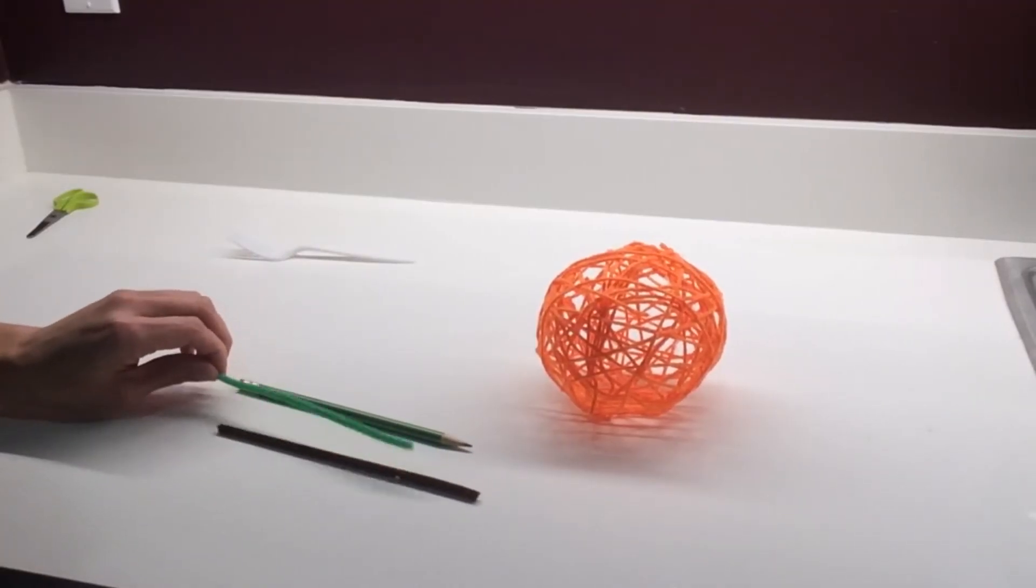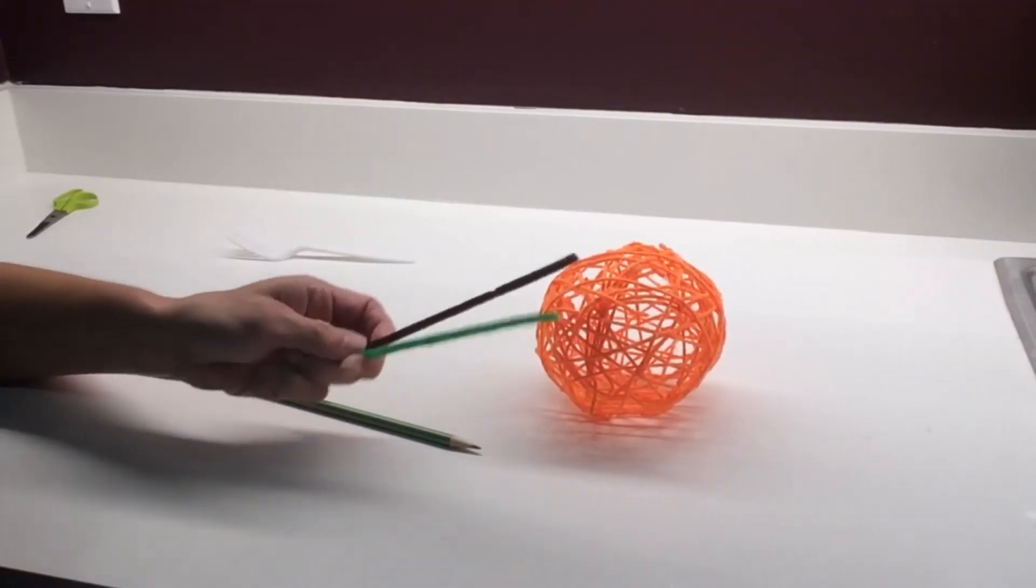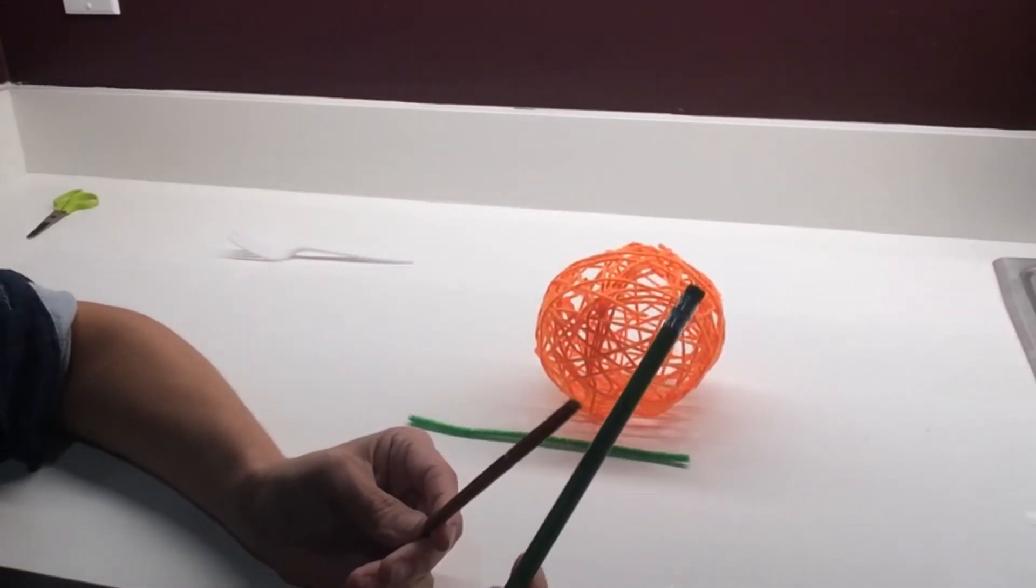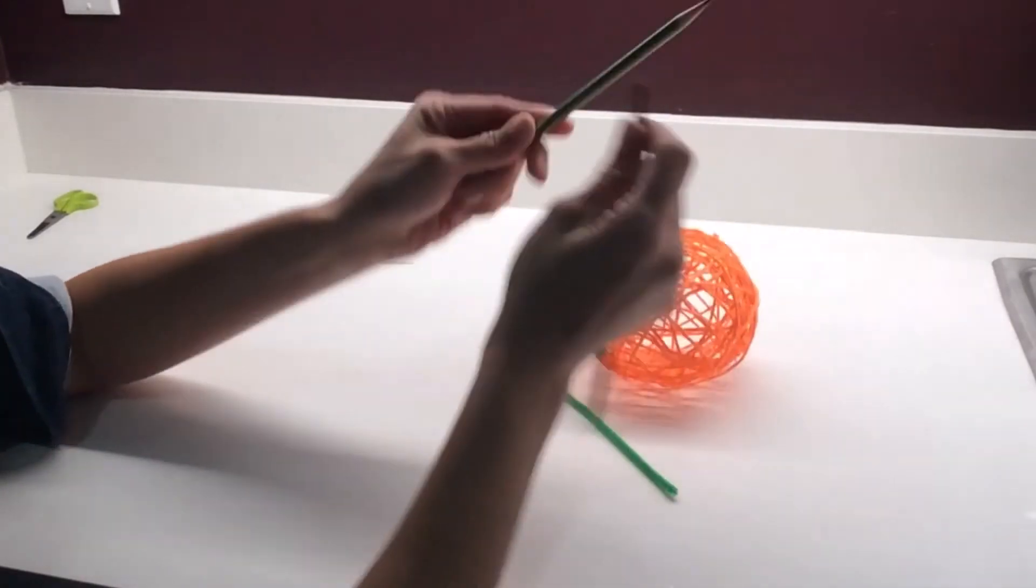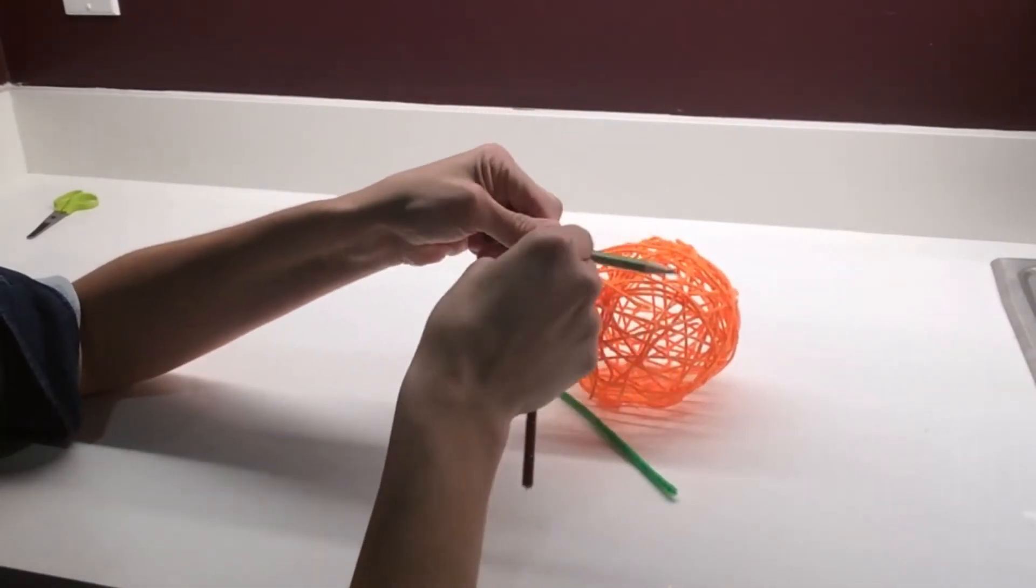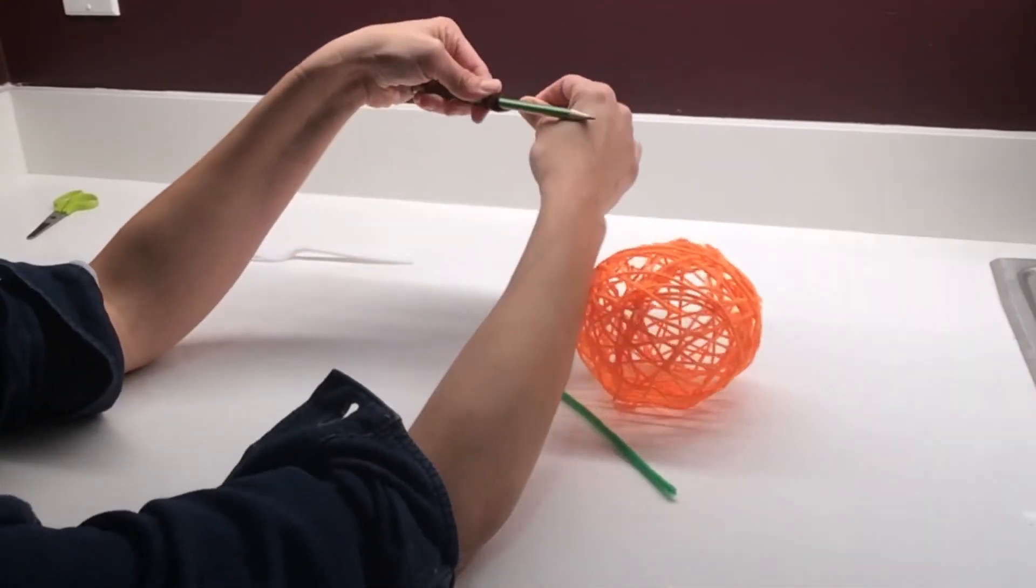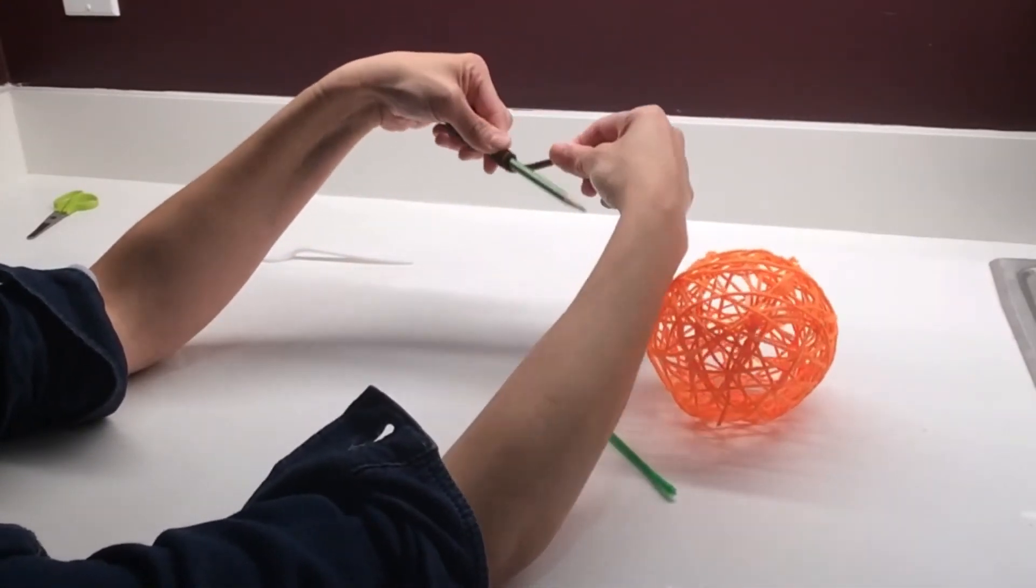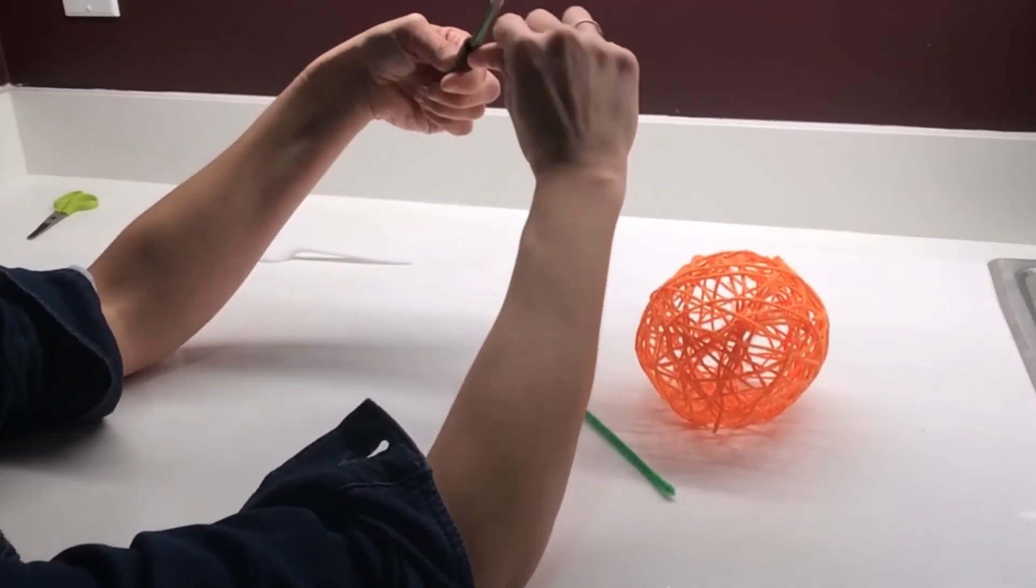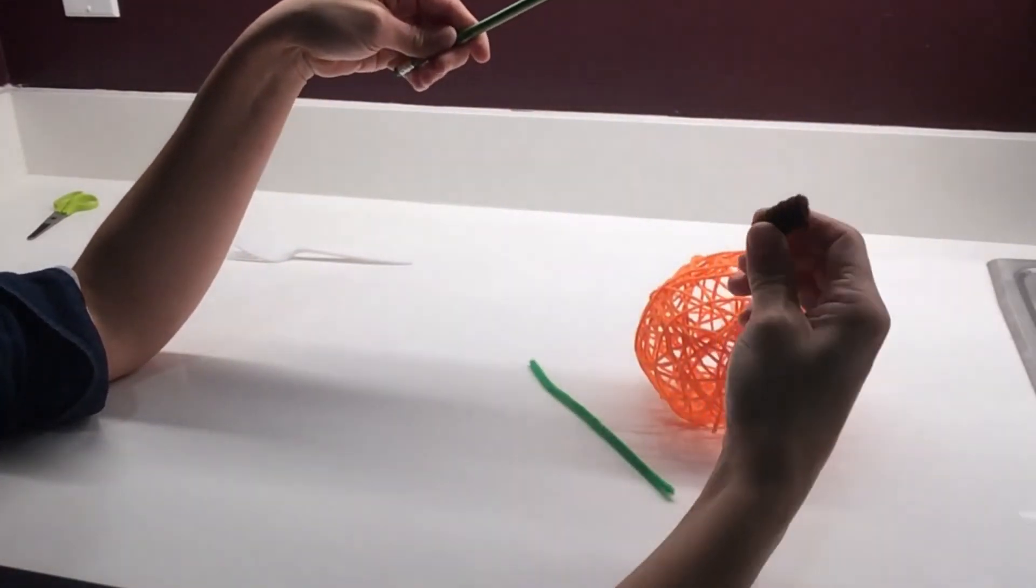Now we're going to make the vine and the stem of the pumpkin with the pipe cleaners. So you'll need your pencil and the pipe cleaners. Take your brown pipe cleaner and wrap it around the pencil in a tight coil. And then slide it off. This is going to be the stem.